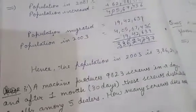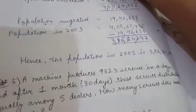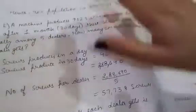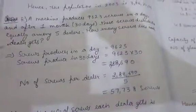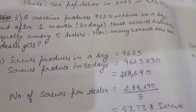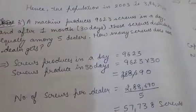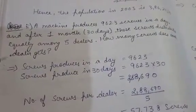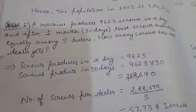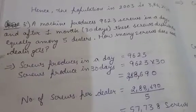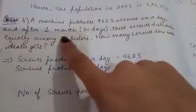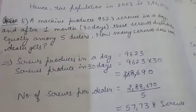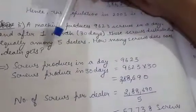Now move to question number 2. A machine produces 9,623 screws in a day, and after one month of 30 days, these screws are distributed among five dealers. How many screws does each dealer get?